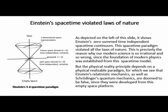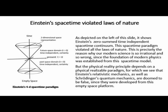Einstein's space-time violated the laws of nature. As depicted on the left of this slide, it shows Einstein's zero-sum, time-independent space-time continuum. This space-time paradigm violated all the laws of nature. This is precisely why our modern science is so irrational and so wrong, since the foundation of modern physics was established from this space-time model. Physical reality depends on a physical realizable paradigm, for which we see that Einstein's relativistic mechanics, as well as Schrödinger's quantum mechanics, are doomed to be false, since they were developed from this empty space platform.